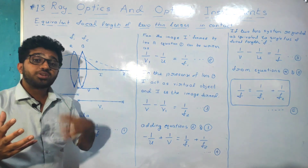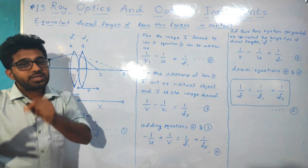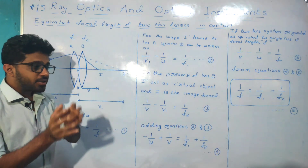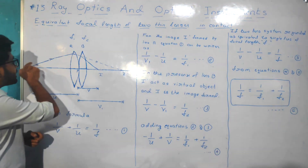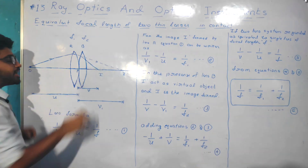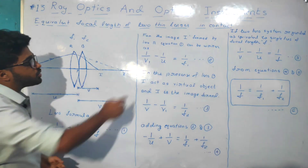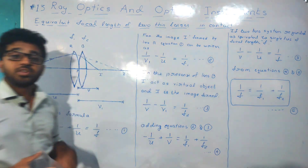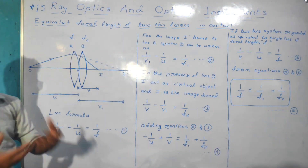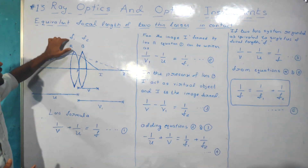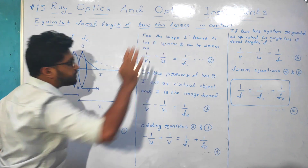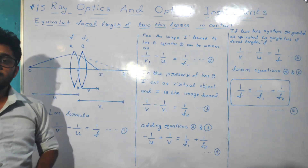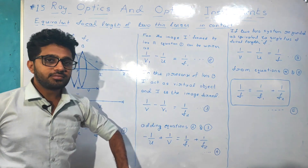The distances which are measured in the opposite direction of the light ray are considered as minus. Since the object distance is opposite to the light ray direction, we denote it as minus 1 by u. So the equation becomes: 1 by v1 minus 1 by u is equal to 1 by F1. This is equation number 2.